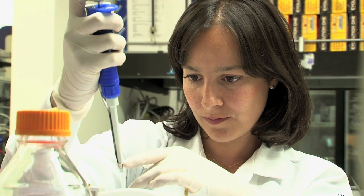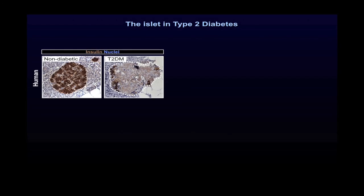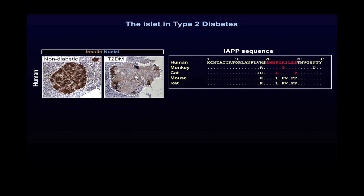The purpose of our study was to understand what leads to beta cell dysfunction and death and causes type 2 diabetes. The islet in type 2 diabetes is characterized by a deficit in beta cells stained in brown and amyloid deposits that derive from islet amyloid polypeptide or IAPP. IAPP is co-expressed and co-secreted with insulin by pancreatic beta cells. As you can see here, IAPP contains an amyloidogenic region in red that is conserved between human, monkey and cat.